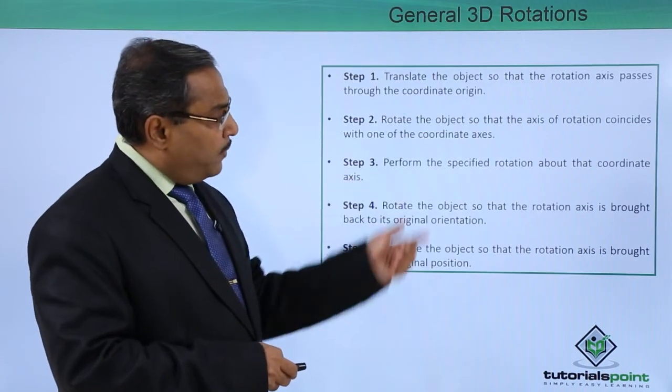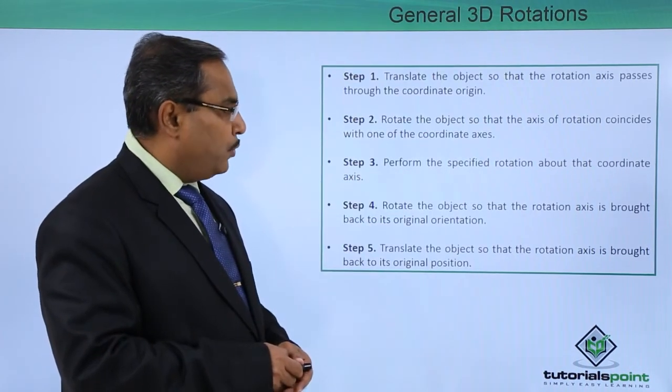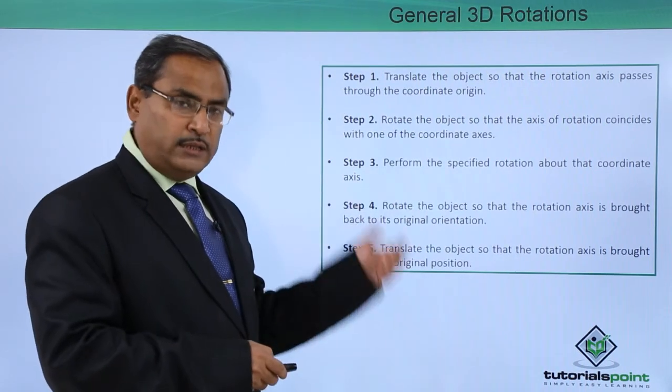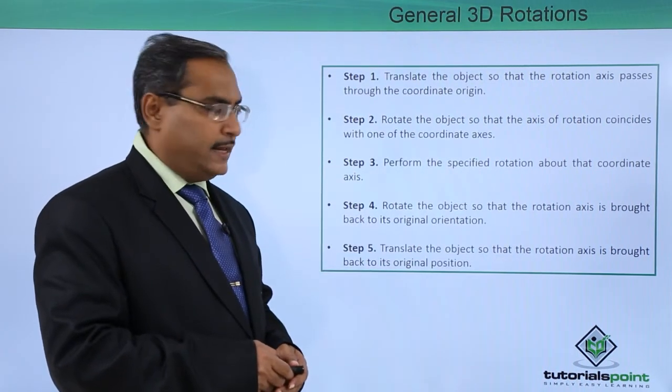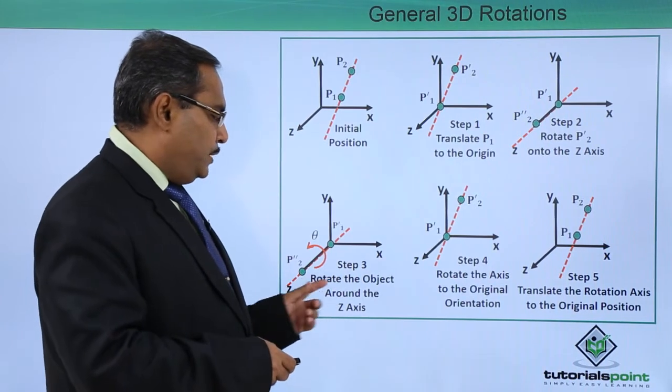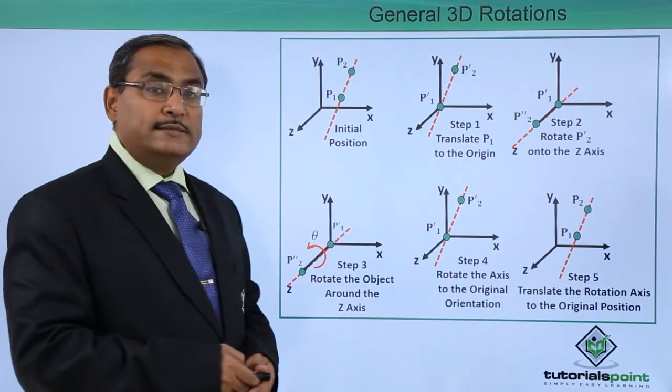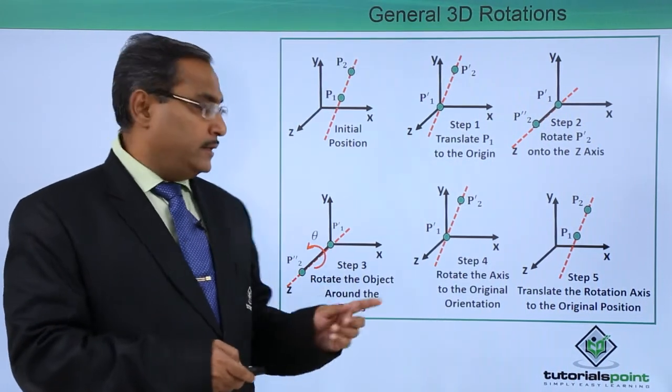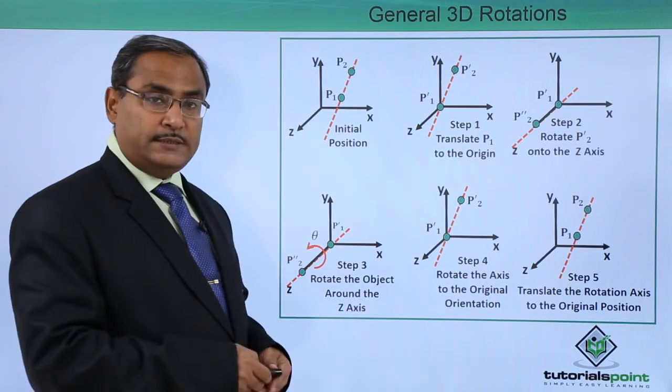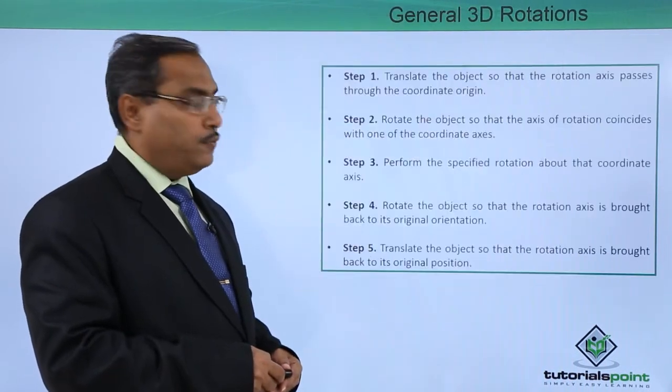Step 3: perform the specified rotation about that coordinate axis. Here the coordinate axis is our z axis. Now step 3, rotate the object around the z axis. As we planned, accordingly the rotation will take place. Now let us go for step number 4.